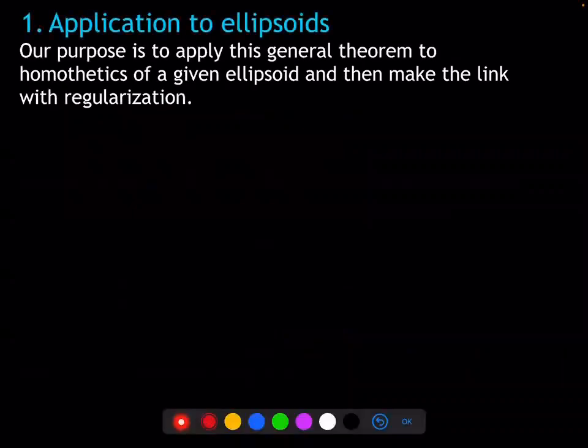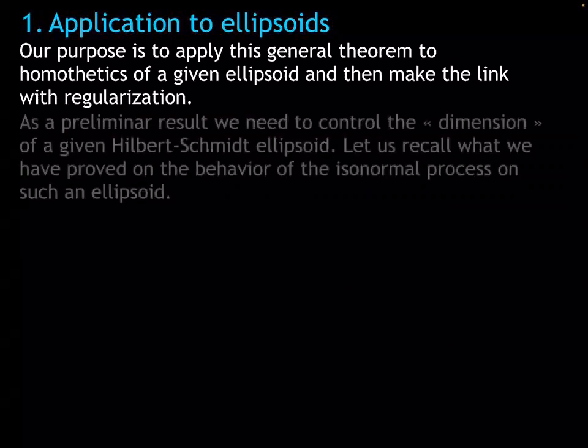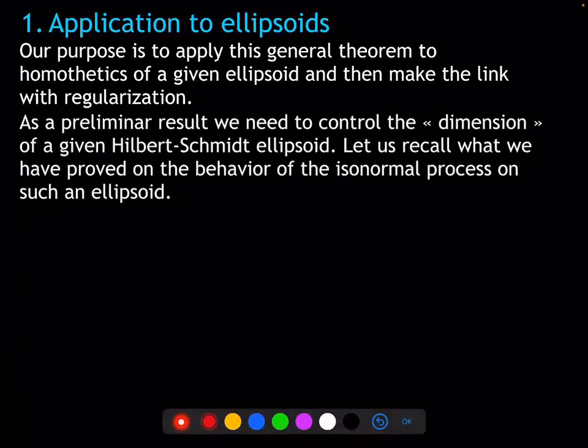Our purpose now is to apply this theorem. This application will directly allow us to analyze the regularization procedure. As a preliminary result, in order to apply the general model selection theorem, we need to control the pseudo-dimension over some given ellipsoid. This will be done through a lemma which allows us to understand the behavior of the iso-normal process on the ellipsoid — a situation we have already looked at when we introduced the iso-normal process.